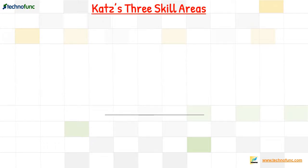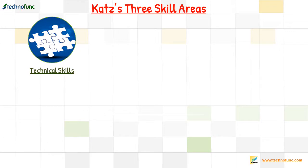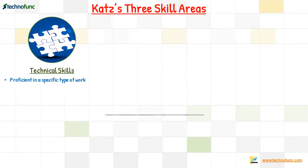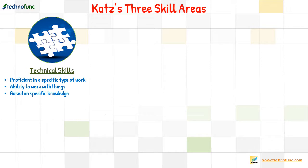The first type of skill is technical skills. As defined by Katz in 1955, technical skill is knowledge about and proficiency in a specific type of work or activity — it is the ability to work with things. Technical skill is proficiency based on specific knowledge in a particular area of work.